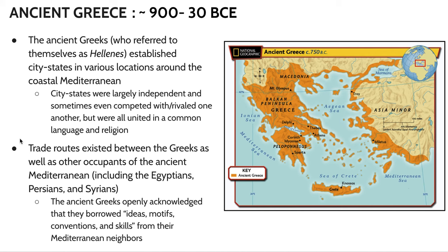We're going to be talking about ancient Greece. We're mostly going to be covering the Archaic period and the first part of the Classical period today. As a brief introduction, the ancient Greeks, who referred to themselves as the Hellenes, established city-states in various locations around the coastal Mediterranean.